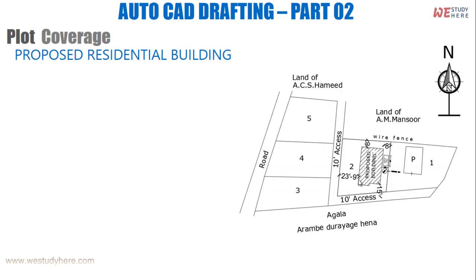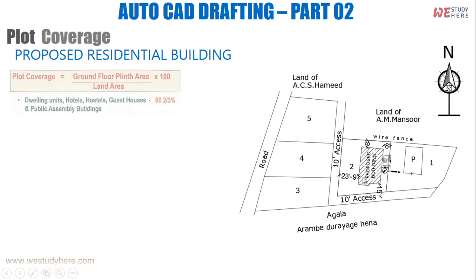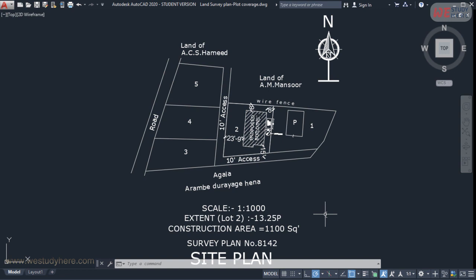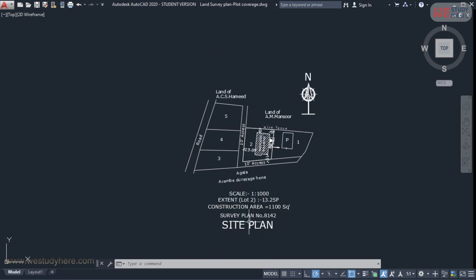Here we have an example site plan with multiple land plots — land numbers one through five — along with a road and a 10-foot access road. Focusing on land number two, there's a proposed building inside. Since this is a residential building, the plot coverage should be less than 66.67%.